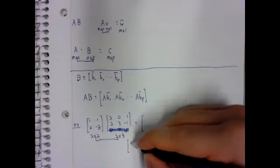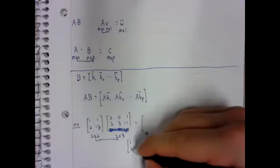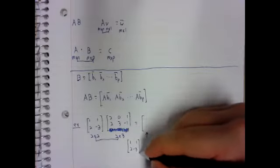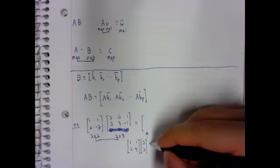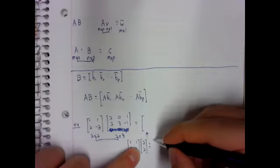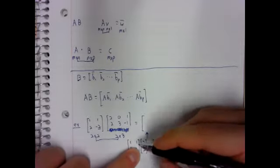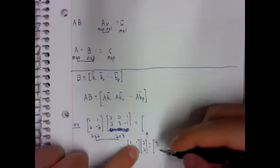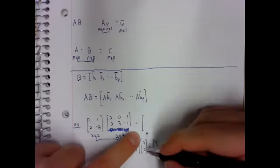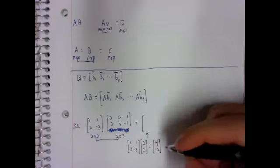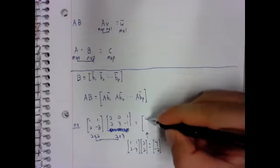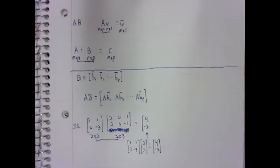One, one, two, negative three times the first column here. The second column is four, negative two. So four, negative two.